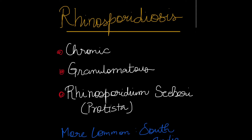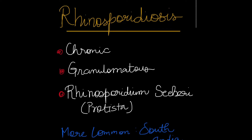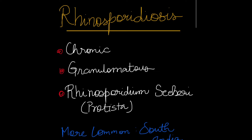Hey guys! So today I will be telling you about rhinosporidiosis. It is a chronic granulomatous condition and it is caused by Rhinosporidium seeberi, which is classified as a member of Protista Mesomycetozoa.